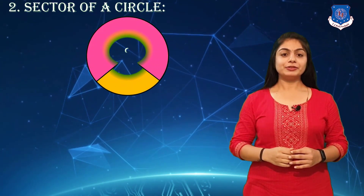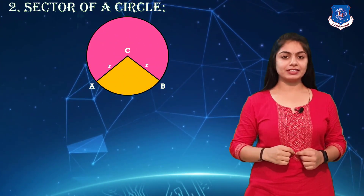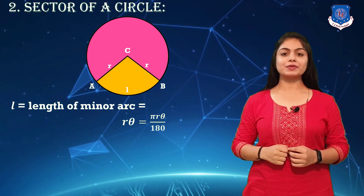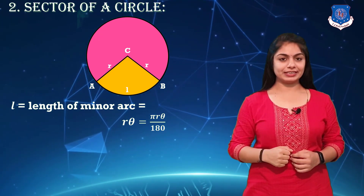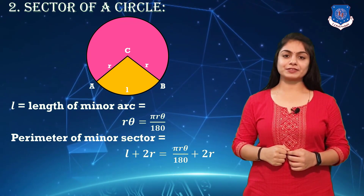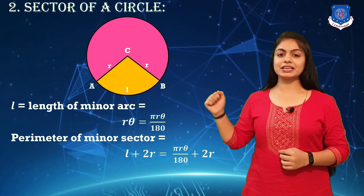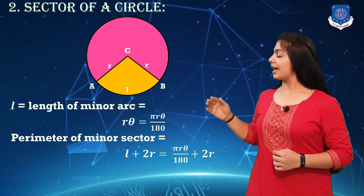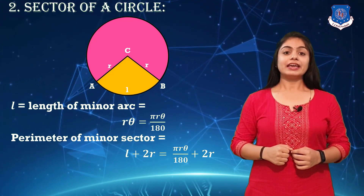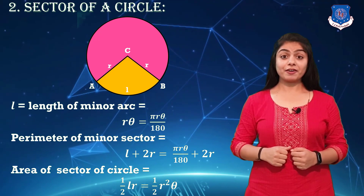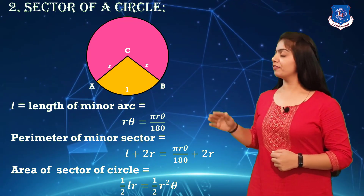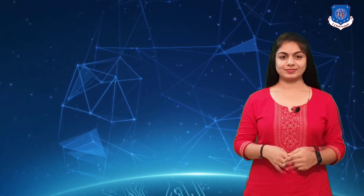The second plane figure is the sector of a circle. In a sector of a circle, L denotes the arc. The perimeter is L = (πrθ/180) + 2r, that is, arc length L plus 2r. The area of a sector of a circle is (1/2)Lr, which simplifies to (1/2)r²θ.